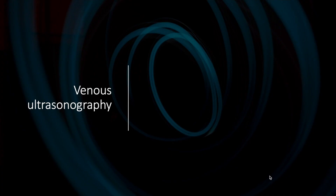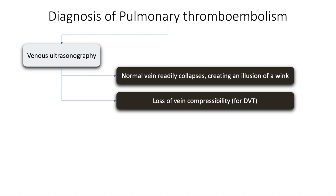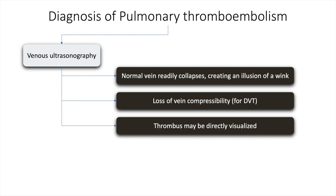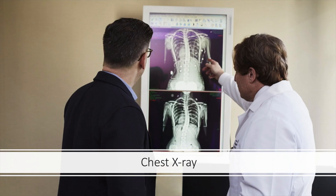Venous ultrasound is based on the principle that a normal vein readily collapses, creating an illusion of a wink. Loss of compressibility is specific for deep vein thrombosis. The thrombus may also be directly visualized and venous flow dynamics can be examined using Doppler.